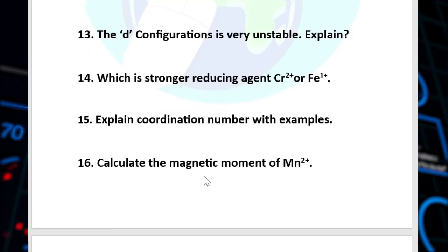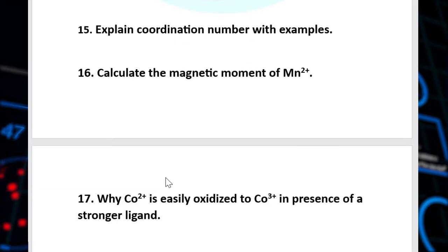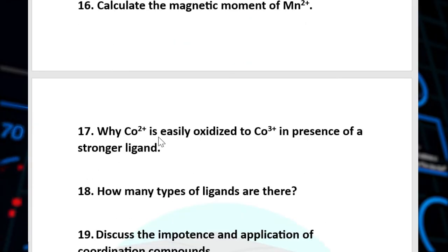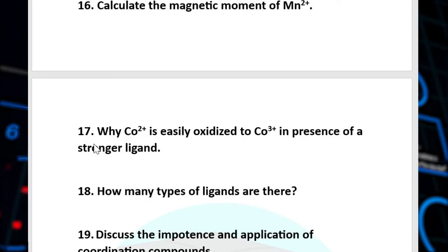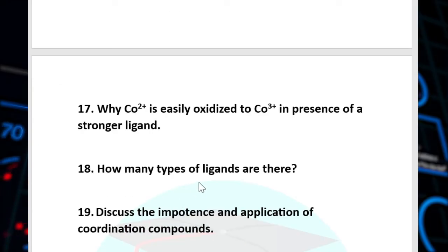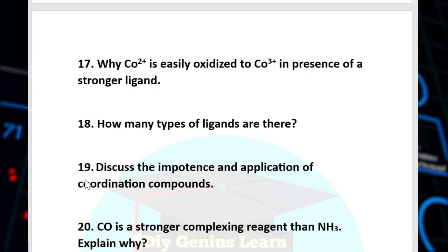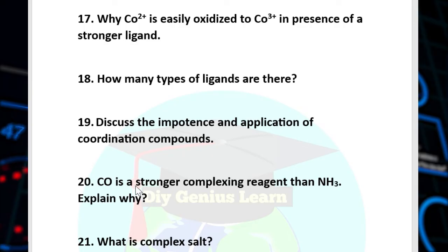Question number 16: Calculate the magnetic moment of manganese 2+ ion. Question number 17: Cobalt 2+ ion is easily oxidized to cobalt 3+ ion in the presence of a stronger ligand — explain. Question number 18: How many types of ligands are there? Question number 19: Discuss the importance and application of coordination compounds. Question number 20: Carbon monoxide is a stronger complexing reagent than ammonia — explain why.